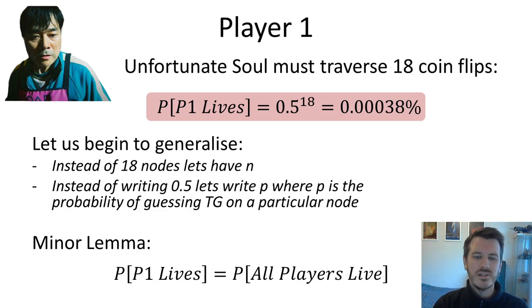Already, though, we can start to generalize. Instead of writing 18, we're going to write n for the number of nodes. And instead of writing 0.5, we're going to write little p. So that's player 1.